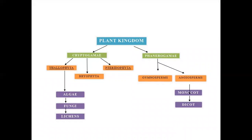The topic we have so far is Plant Kingdom. Bentham and Hooker classified the Plant Kingdom. We have two divisions here: Cryptogamae and Phanerogamae. Cryptogamae means seedless plants and Phanerogamae means seeded plants. Bentham and Hooker did this classification.